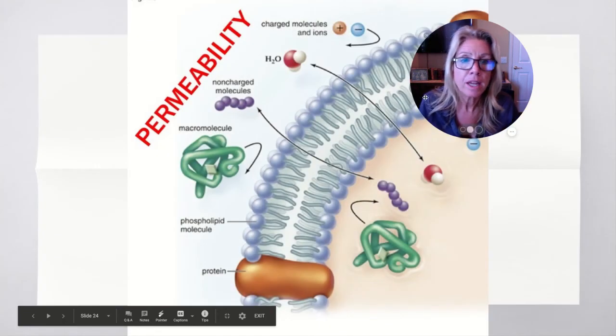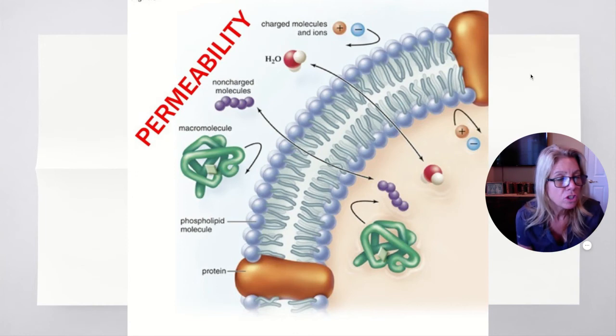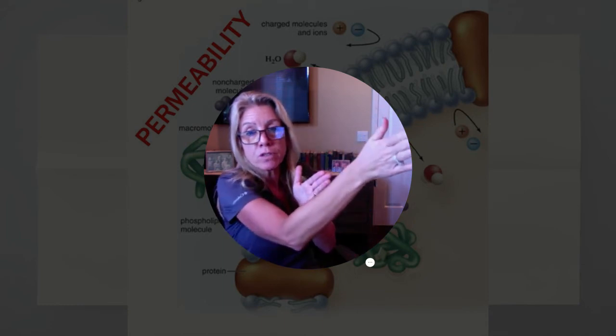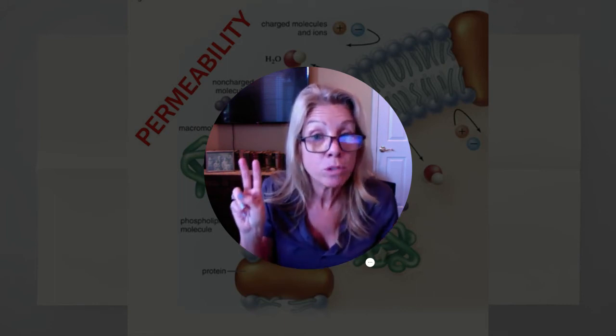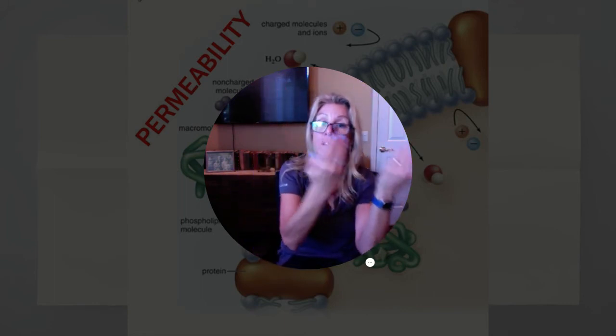There are three ways and only three ways to cross the membrane. First, you can go through the phospholipid bilayer — but not if you are large or charged. Second, you can use a channel or a carrier. Third is bulk transport, where you use the whole membrane — engulfing like endocytosis, and we'll learn about three different types of endocytosis, or exocytosis where you're expelling something.